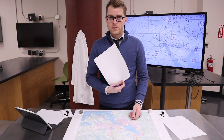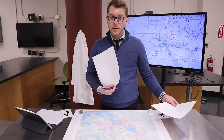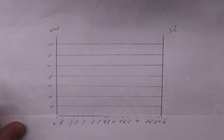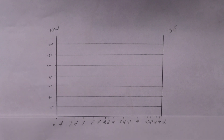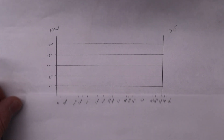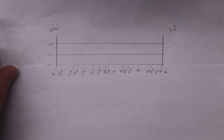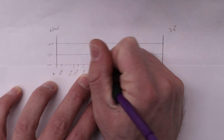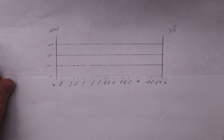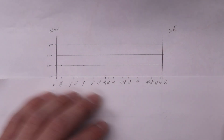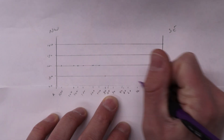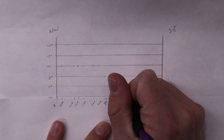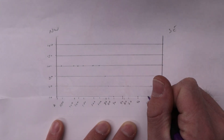Once I've got all my ticks and numbers recorded I'm going to go back to my other piece of paper and line up A and A' with the extent of my profile. Then I just start plotting these numbers on the corresponding lines as dots — marking 100, 100, 100, 100, then 60, 60, 60, 60, then 40, 40, 40, 40.